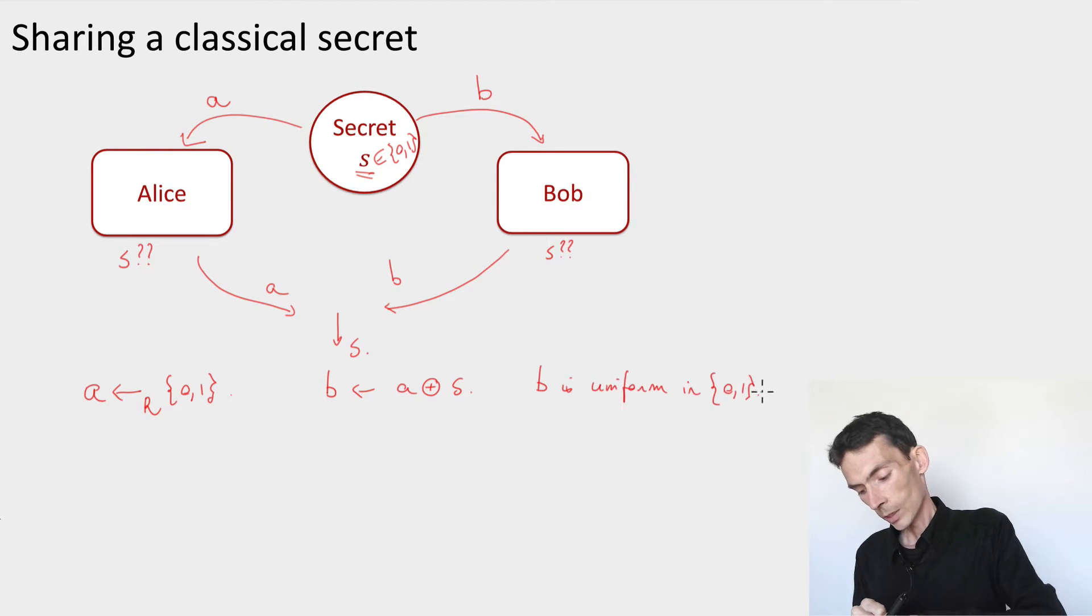uniformly distributed in 0 1. So if I give A to Alice and B to Bob, these, from their point of view, just look like uniformly random bits. But if we put them together and we take the parity of A and B, we recover the secret S.